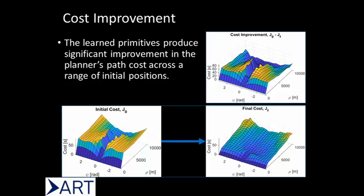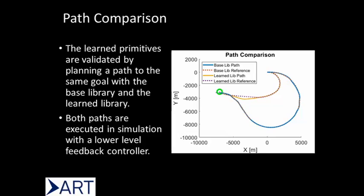Here we demonstrate the result of our learning framework. The figures show the cost to go to various goals with a base library of manually designed motion primitives, as well as a learned library which adds new motion primitives onto that base library. Clearly, there is a significant improvement with the learned motion primitives. This improvement is also demonstrated qualitatively by comparing paths planned with hybrid A-star using the base library and the learned library.